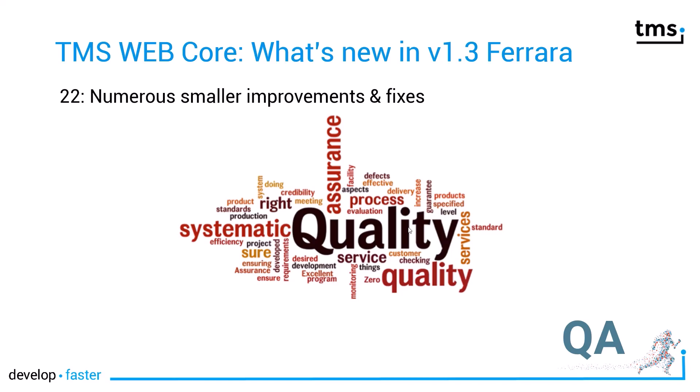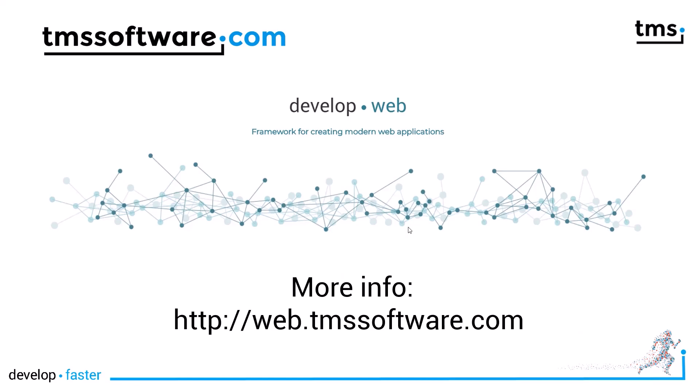And as always, numerous smaller and bigger improvements and fixes to improve quality and make your daily work with TMS WebCore much easier. Hopefully we triggered your interest — these were 22 features added to version 1.3. If you want more information on a specific feature, go to webtmssoftware.com. There are demonstrations for most of these features, a user manual, and if you're already a user you can download your version there. There's also a trial if you're interested in developing a web application with TMS WebCore.